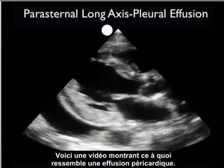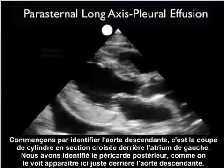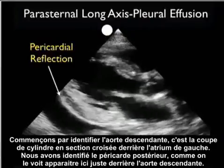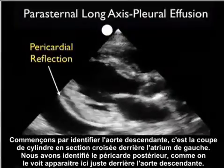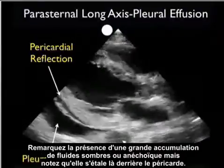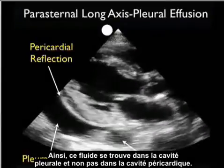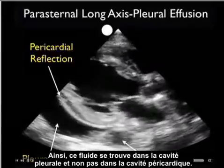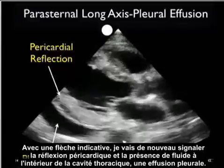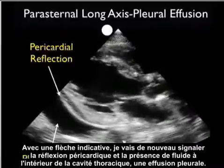Here's a video clip showing a potential mimic of a pericardial effusion. Let's begin by identifying the descending aorta as a cylinder cut in cross-section posterior to the left atrium, and we identify the posterior pericardium coming off just anterior to the descending aorta. Note the presence of a large dark or anechoic fluid collection, but note that it layers out posteriorly to the pericardium. Thus, this fluid is within the pleural cavity and not within the pericardial cavity. With a small indicator arrow, I'm reinforcing the pericardial reflection and the presence of the fluid within the thoracic cavity — a pleural effusion.